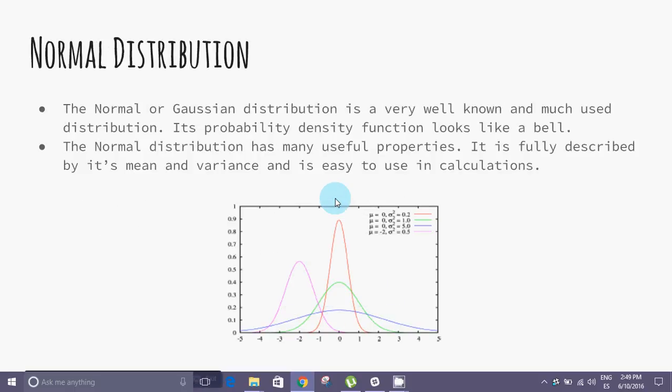Normal distribution. With normal distributions we have good things. Given enough experiments, a binomial distribution converges to a normal distribution.